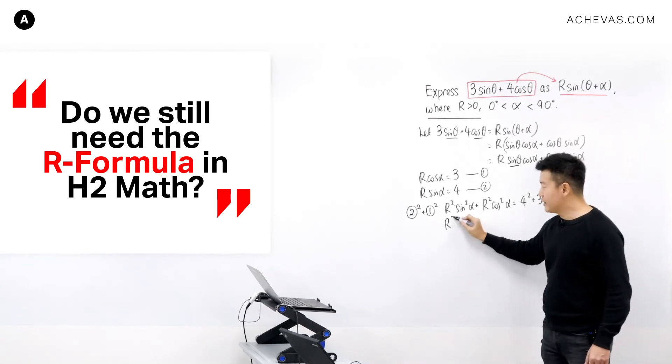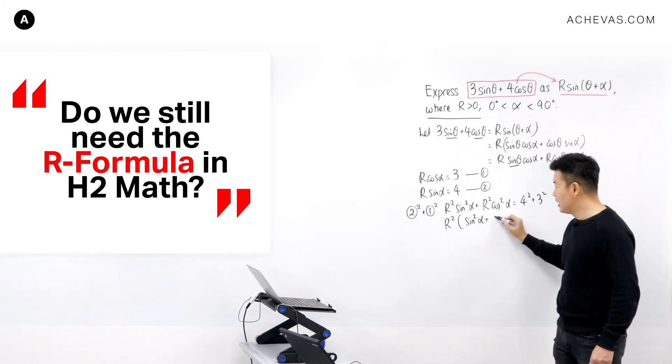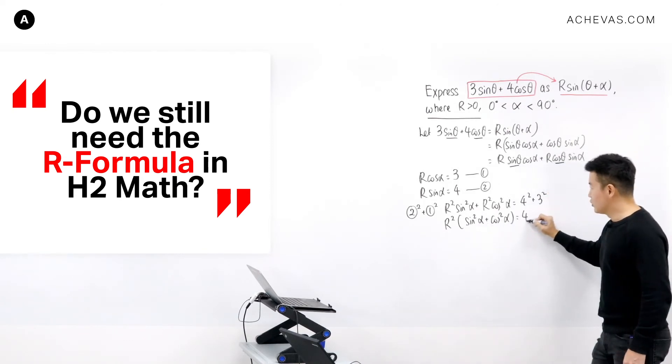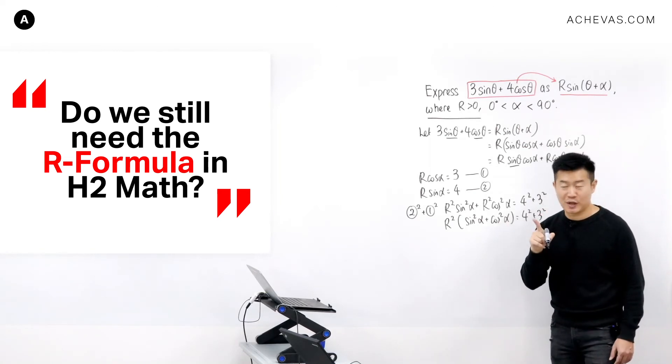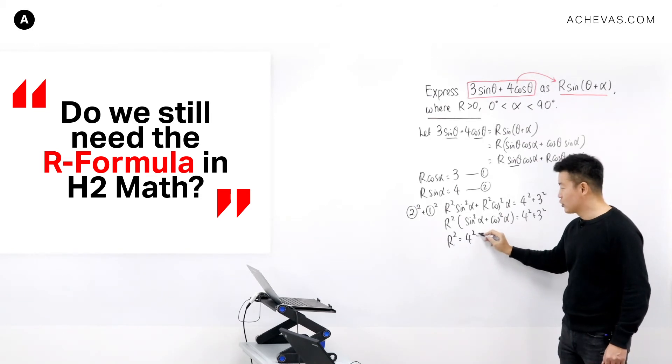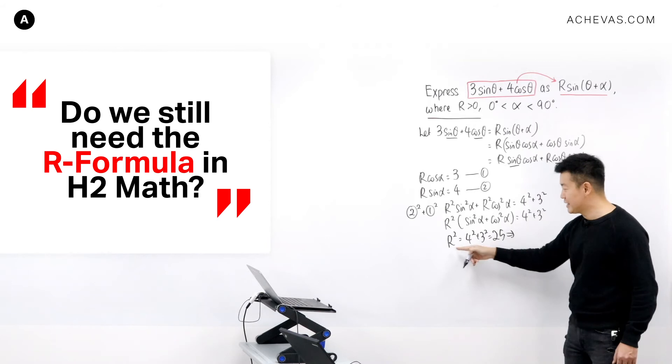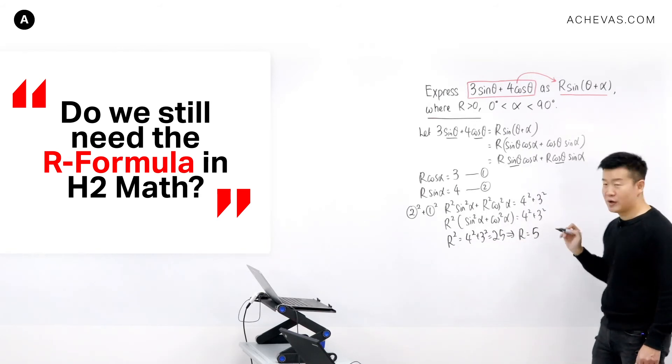And if I were to factorize R squared, I'm going to be left with R squared times sine squared alpha plus cosine squared alpha. This is equal to 1, which means that R squared is going to be equal to 4 squared plus 3 squared, which is equal to 25. This tells me that R is equal to square root of 25. It is equal to 5.